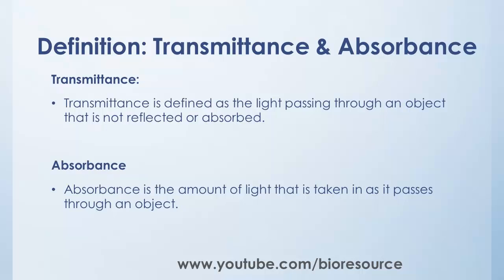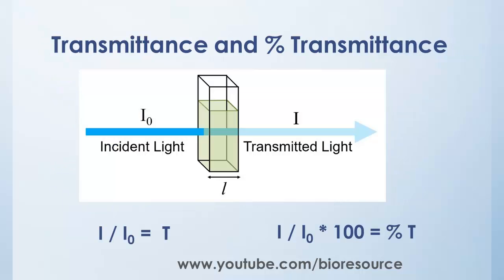Absorbance is the amount of light that is taken in as it passes through an object. When light of appropriate wavelength strikes a cuvette that contains a colored sample, some of the light is absorbed by the solution.